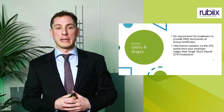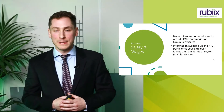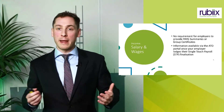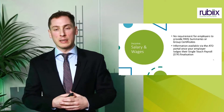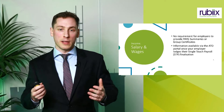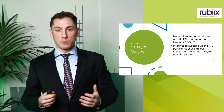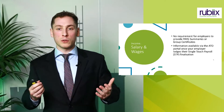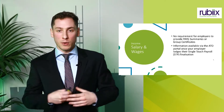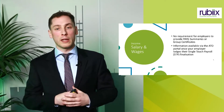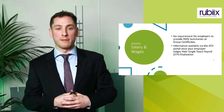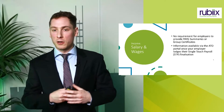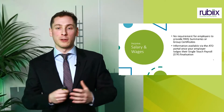Firstly, we're going to touch on income, starting with salary and wages. In the past, you'd have to request or receive from your employer a PAYG summary or group certificate. Now, there's no longer a requirement to do this — this started at the end of last financial year. Your employer has the obligation to lodge everything through what's called single-touch payroll, or STP. Once they lodge the STP finalisation, all that information regarding your salary and wages will be available on the ATO portal, and we will have access to that. So in regards to that, you don't need to do anything — you just have to rely on your employer.